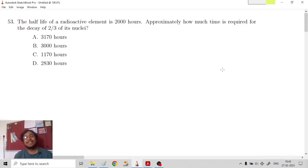Namaste. Welcome back. We are solving the ACE Aptitude Test 2021 physics questions. In this video we are going to solve question number 53. The half-life of a radioactive element is 2000 hours. Approximately how much time is required for the decay of two-thirds of its nuclei? This is a very simple problem.